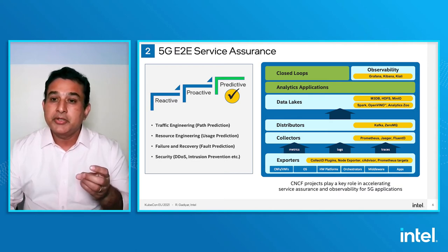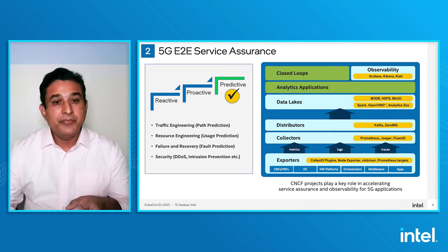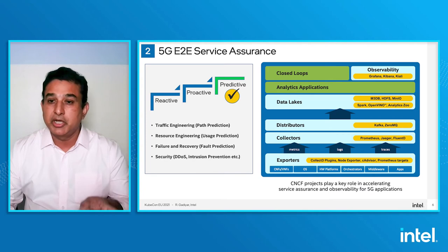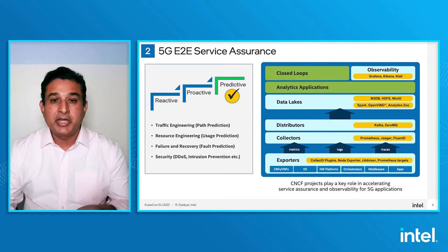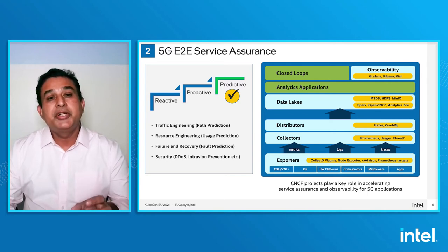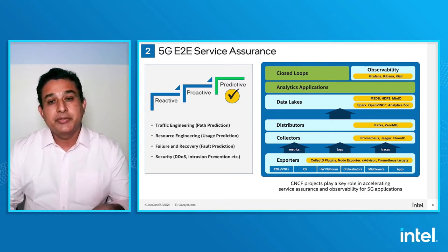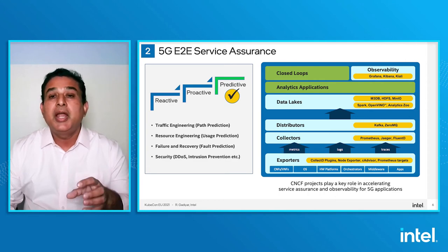There are three key requirements. First, collect data — metrics, logs, traces — from various entities at multiple edge locations. Second, the ability to distribute data to appropriate data lakes. And third, store data efficiently in data lakes, perform analytics using machine learning techniques, and take closed-loop actions. The diagram on the right shows a framework almost entirely built with open source software, many of which are mature CNCF projects.